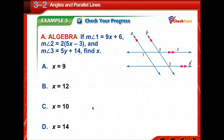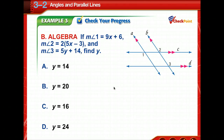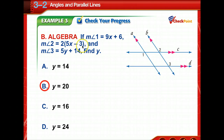Time to check your progress. Pause the video, study the diagram, and select your answer. The answer is x equals 12. We set 9x + 6 equal to 10x − 6 and solve to get x equals 12. For the next problem, since x equals 12 we substitute in: 10(12) − 6 equals 114. Then 5y + 14 equals 114, so solving for y gives y equals 20.